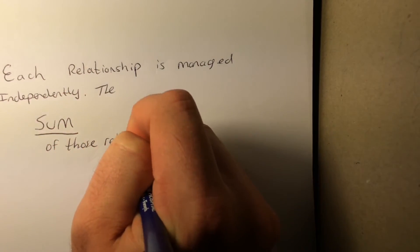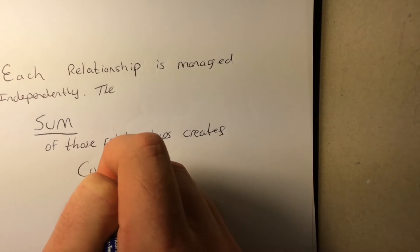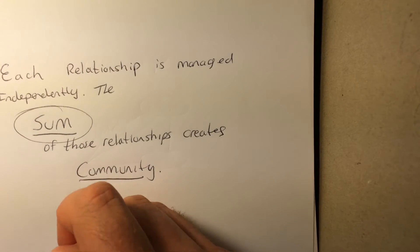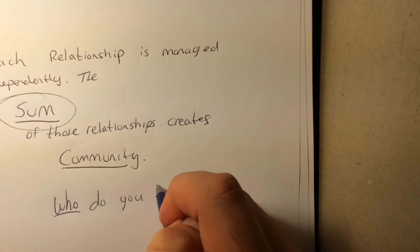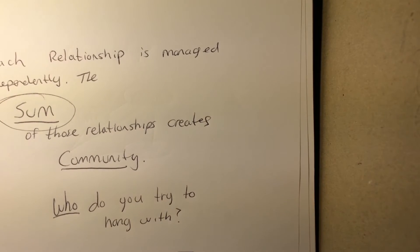So where do we start? The first is every relationship is independently managed. Each relationship that you have with another person is between you and that person. And the sum of all those relationships creates a community. And so the question becomes, how do I choose my community? How do I choose who I independently hang out with? If only there was a formula.